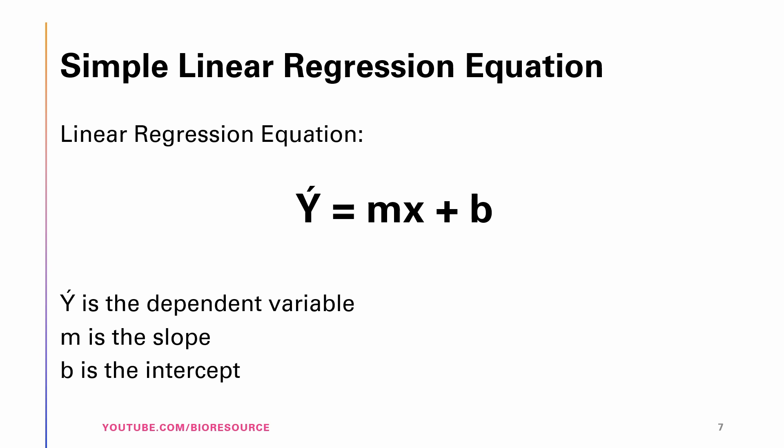The simple linear regression equation is given as y' = mx + b, where y' is the dependent variable, m is the slope, and b is the intercept. Y' is the respective estimate of the y value, which means that for each x value the corresponding y value is estimated.